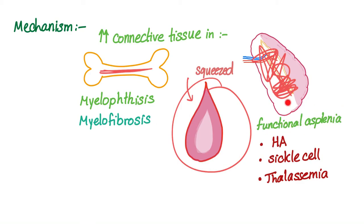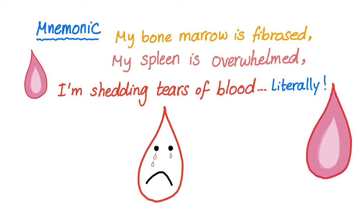In the spleen, we have functional asplenia — the spleen is useless if it's infiltrated or overwhelmed with different tissue. Hemolytic anemia: sickle cell and thalassemia. Here is a mnemonic: my bone marrow is fibrosed, my spleen is overwhelmed — that's why I'm shedding tears of blood. Literally — teardrop cells or dacrocytes. Bone marrow fibrosed: myelofibrosis or myelophthysis, infiltration. Spleen overwhelmed: functional asplenia, sickle cell anemia, thalassemia, etc.